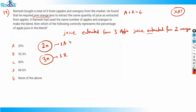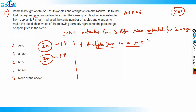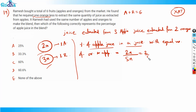Now I can find the percentage of apple juice in a blend with an equal number of oranges and apples. The percentage of apple juice equals 2x upon the total, which is 5x. That equals 2 by 5, which is 40%.